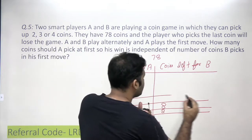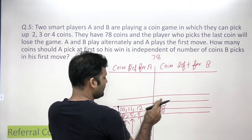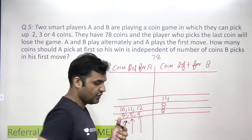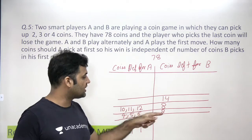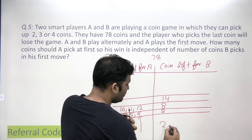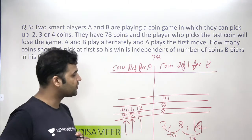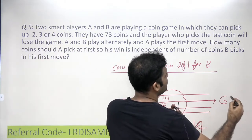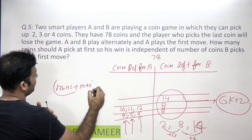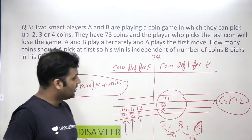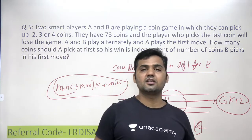Continuing the pattern: if B gets 12 coins on the table and picks 2, B needs 14 coins. You can see the series is 2, 8, 14 - increasing by 6 each time. All these numbers are of the form 6k plus 2, which matches exactly what we derived directly using the formula: minima plus maxima into k plus minima. So the shortcut formula is valid for the case where the person picking the last coin loses.